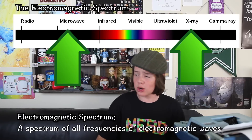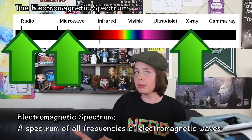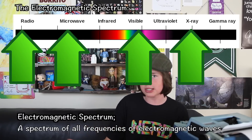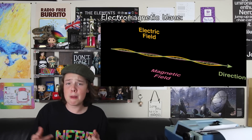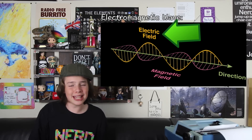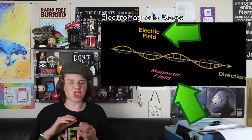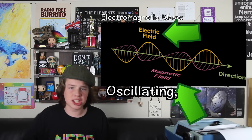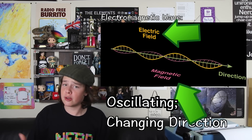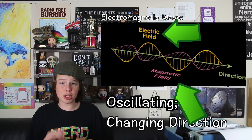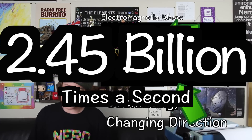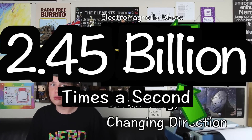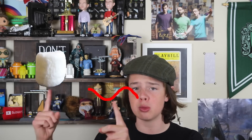The electromagnetic spectrum is a spectrum of all the frequencies of electromagnetic waves. Along with microwaves, this includes stuff like X-rays, radio waves, and most notably visible light. Electromagnetic waves are unsurprisingly made up of an electric field and a magnetic field. These fields are constantly oscillating — changing direction — up to 2.45 billion times a second.